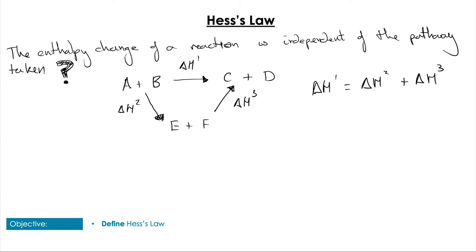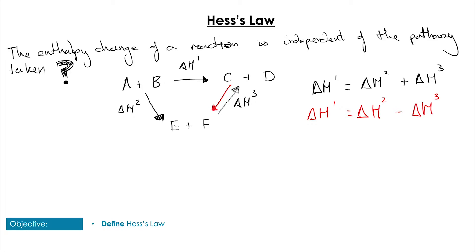This functions as a visual representation of the statement that the enthalpy change of reaction is independent of the pathway. For example, what if E plus F actually didn't make C and D, and instead C plus D made E and F? Well, we would switch the arrow, but that would change the overall relationship. Following that same pathway, we would now get delta H1 is equal to delta H2 minus delta H3, as we have to go against the arrow.